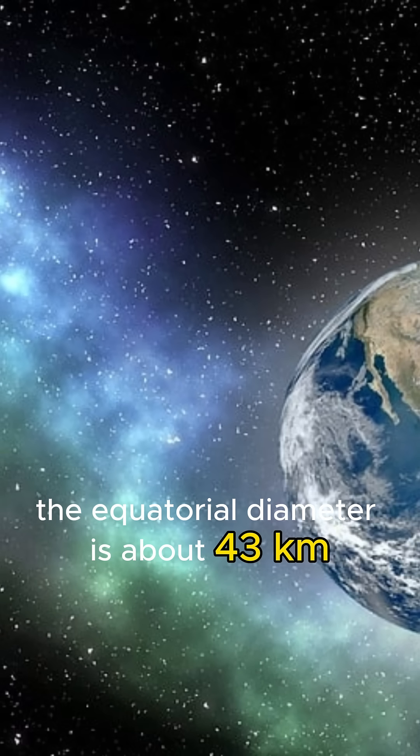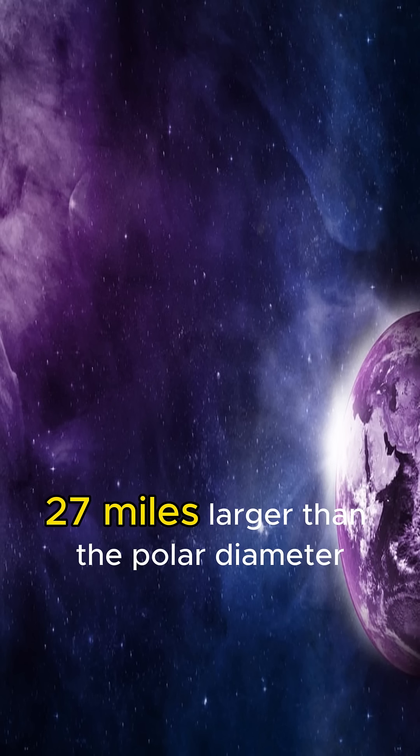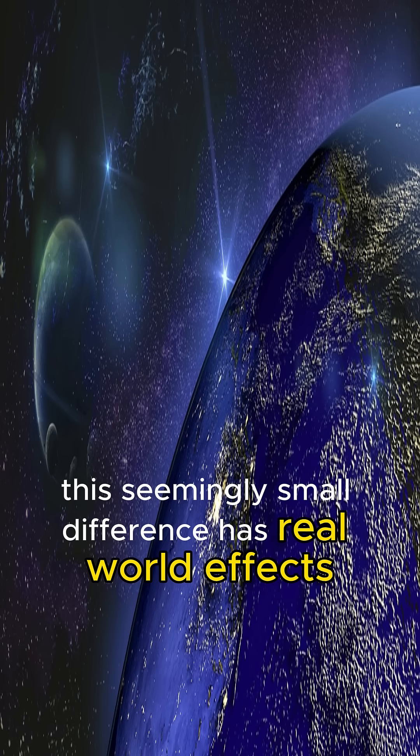The equatorial diameter is about 43 kilometers, 27 miles, larger than the polar diameter. This seemingly small difference has real-world effects.